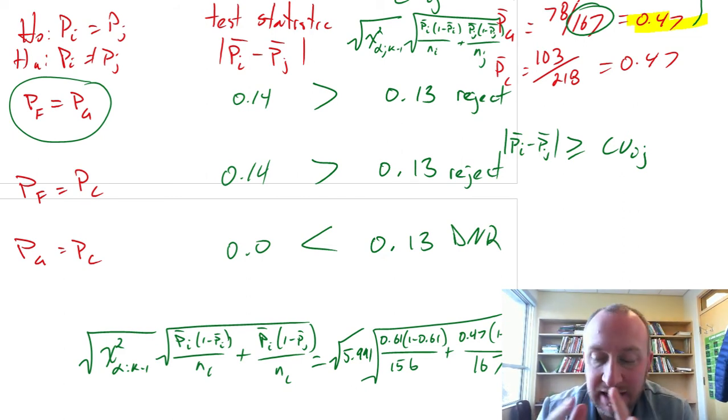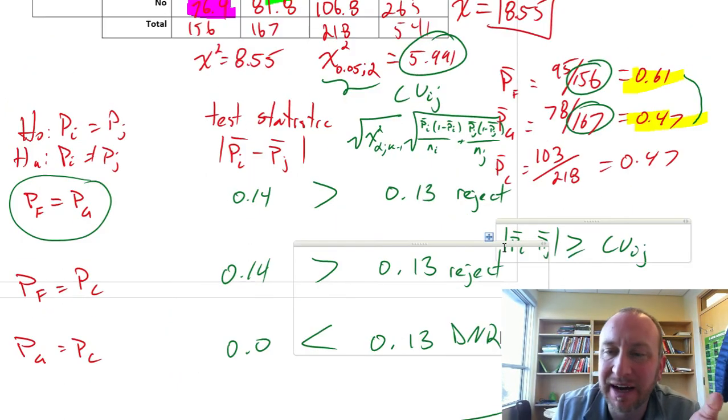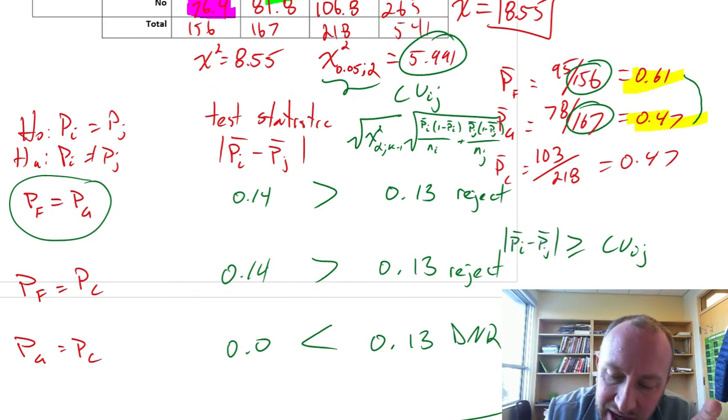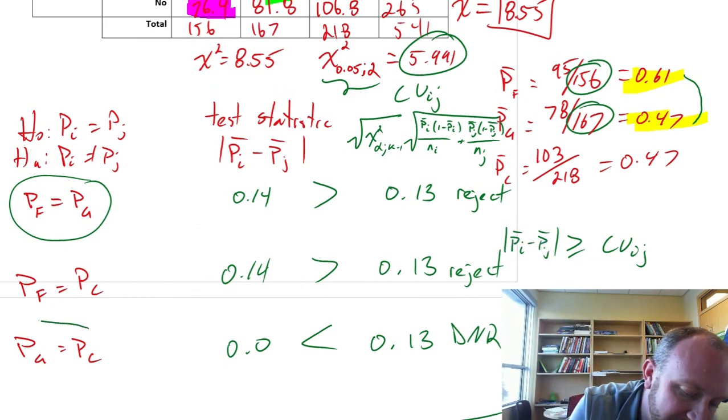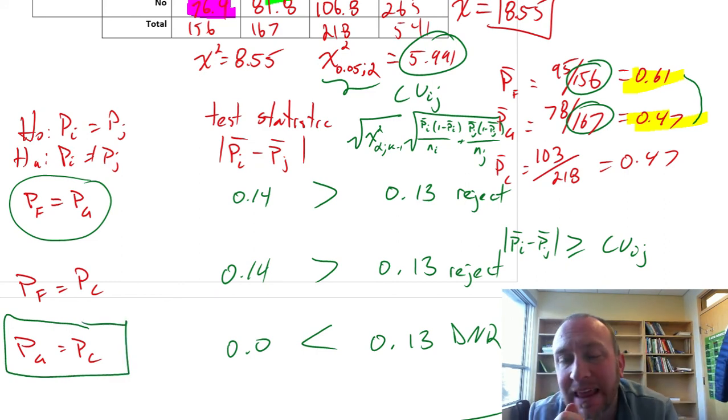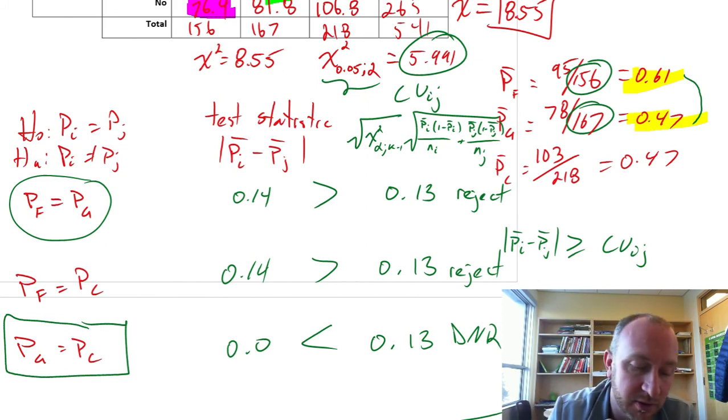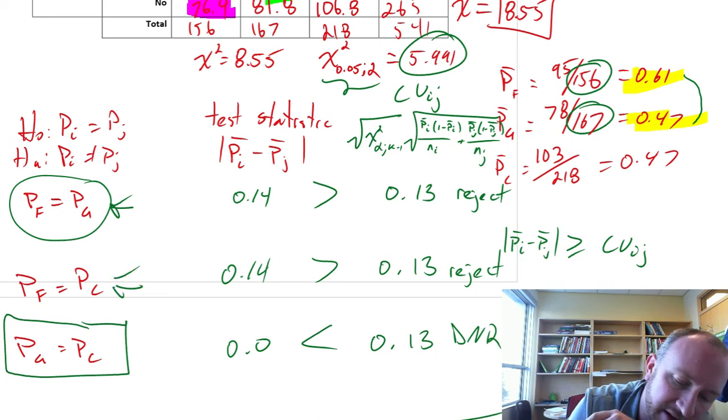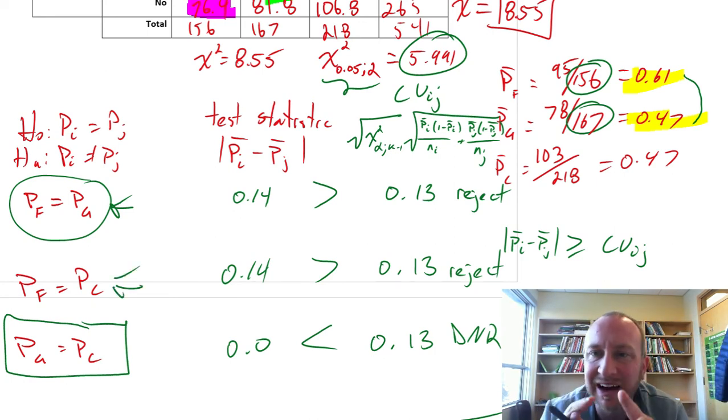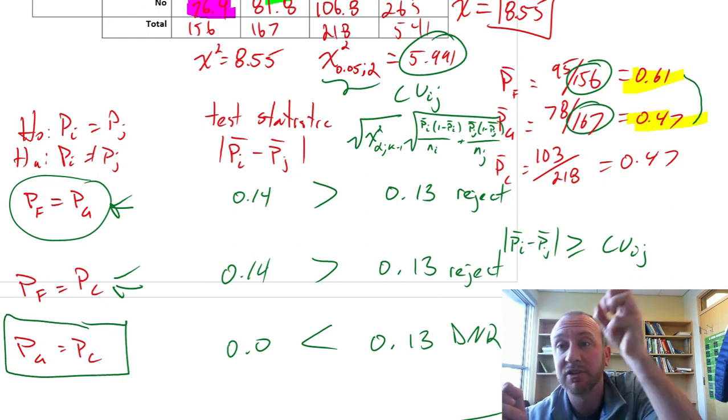So we have that, as we might have suspected looking at those sample values, we have insufficient evidence to show that there's a difference in the proportion of GMC and Chevy owners who would purchase that same brand of vehicle again. Those two populations, they appear to be the same. At least I cannot show that they're different. It's the Ford owners that are different. So the Ford owners, they're different from the GMC and they're different from the Chevy owners. So we've identified that one proportion that is different from the other two.